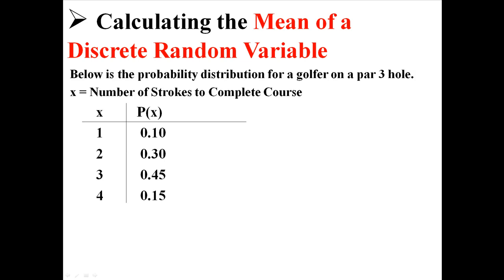I'm just going to give you this sample probability distribution for a golfer on a par-3 hole, where x is the number of strokes to complete the course. So you see most of the time, 45% of the time, the golfer does it in three strokes, sometimes he does it in two, and every once in a while he'll do it in one or four.